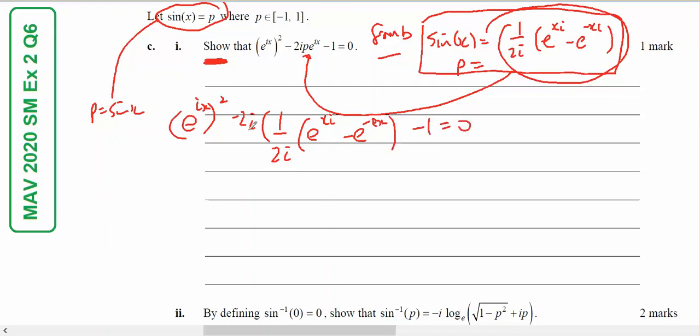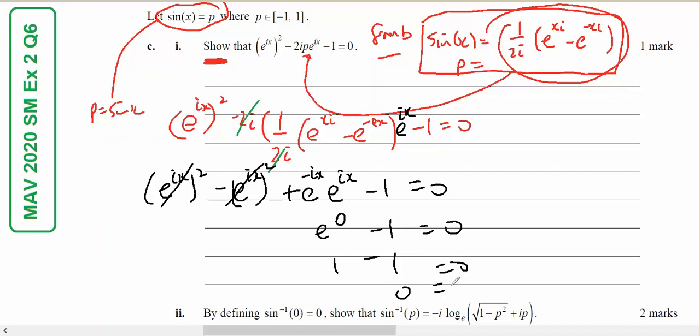You'll notice that these cancel, and I've lost an e to the ix. So I get e to the ix squared minus this times this which gives e to the ix squared, so they're the same thing, and then minus minus plus gives e to the minus ix times e to the ix minus 1 equals 0. We add these powers, so e to the 0 minus 1 equals 0. They cancel themselves. 1 minus 1 equals 0, 0 equals 0, therefore shown.